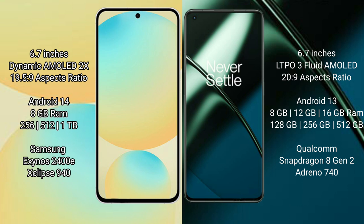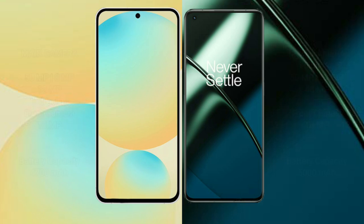The Samsung Galaxy S24 FE is powered by an Exynos 2400E processor with a GPU. The OnePlus 11 comes with 8GB, 12GB, or 16GB RAM and 128GB, 256GB, or 512GB internal storage, powered by a Qualcomm Snapdragon 8 Gen 2 processor with an Adreno 740 GPU.